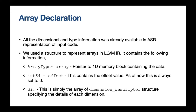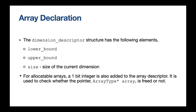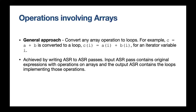Then comes the 'dim', which is the dimension descriptor structure. It describes each dimension separately as an array of dimension descriptor structures. Each structure contains a lower bound, upper bound, and the size of the current dimension. For allocatable arrays, we also store an extra one-bit integer which tracks whether the 1D memory pointer has been freed during runtime.